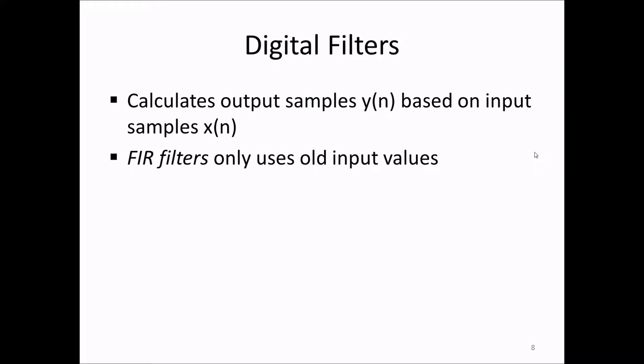This can be done in predominantly two different ways. The first and simplest is the FIR filter, the finite impulse response filter. This filter has a formula that produces an output value y of n at time sample number n as a sum of b coefficients times old input values.